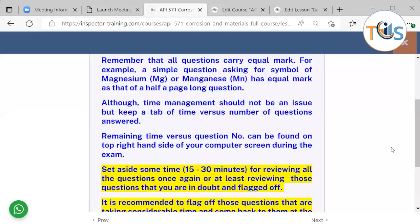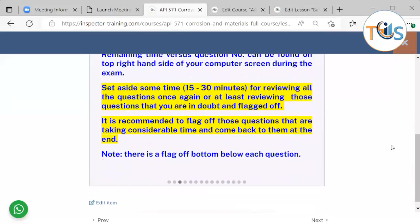Remaining time versus question number can be found on the top right corner of your computer screen during the exam. Set aside 15 to 30 minutes for reviewing all the questions once again, or at least reviewing those questions that you are in doubt and flagged off. It's recommended to flag off those questions that are taking considerable time and come back to them at the end. There is a flag button next to each question.